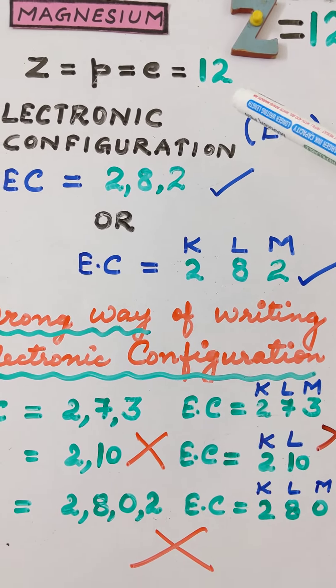2 plus 8 is 10, so we are left with 2 more electrons to complete 12 electrons. Those 2 electrons are now filled in the M shell since the K and L shells are now complete. Therefore the correct electronic configuration is 2 in the K shell, 8 in the L shell, and 2 in the M shell — or it is also written as 2, 8, 2. Any other way of writing the electronic configuration apart from these two methods is absolutely incorrect.